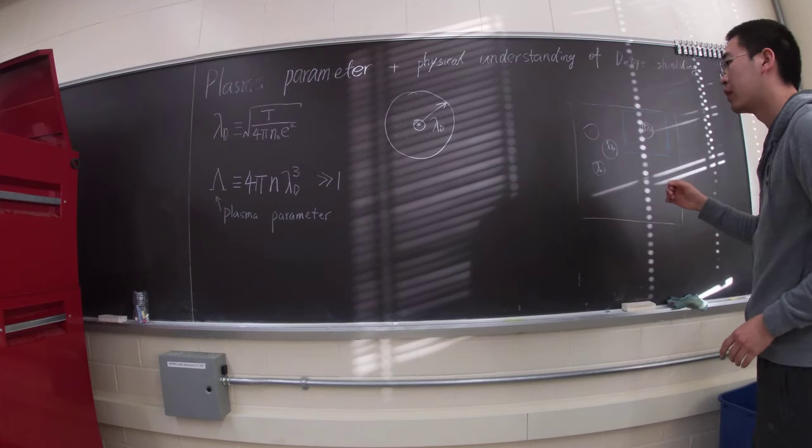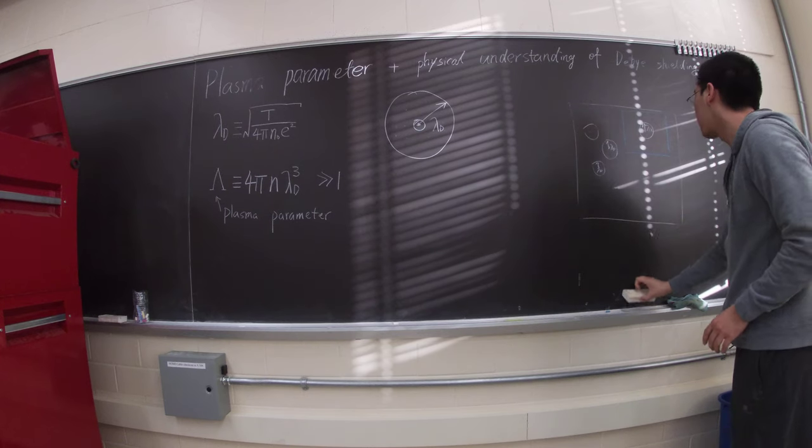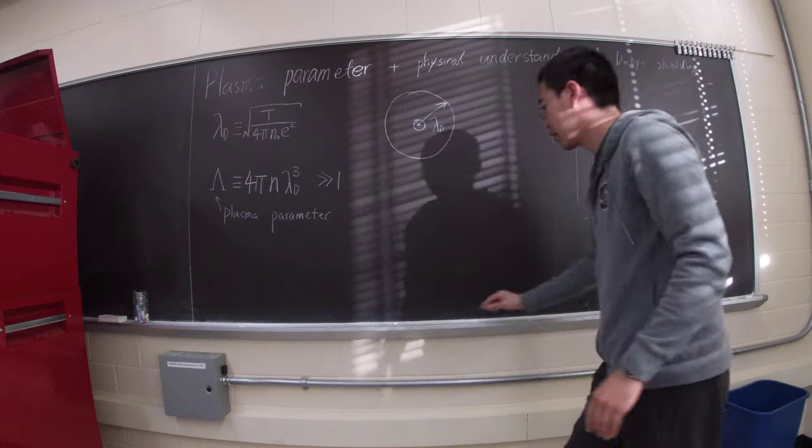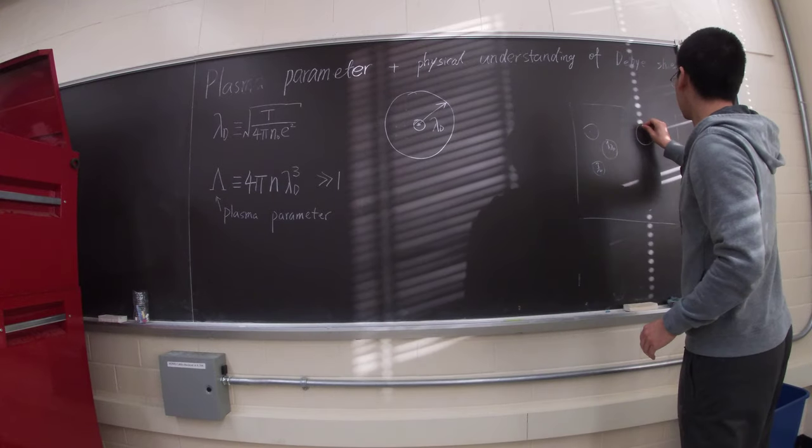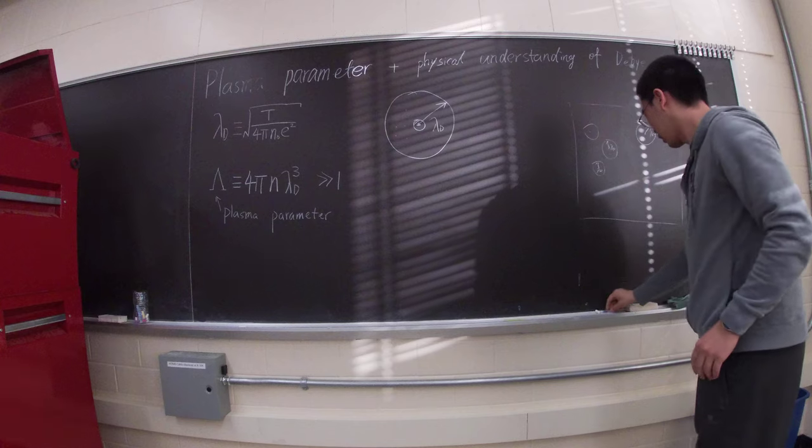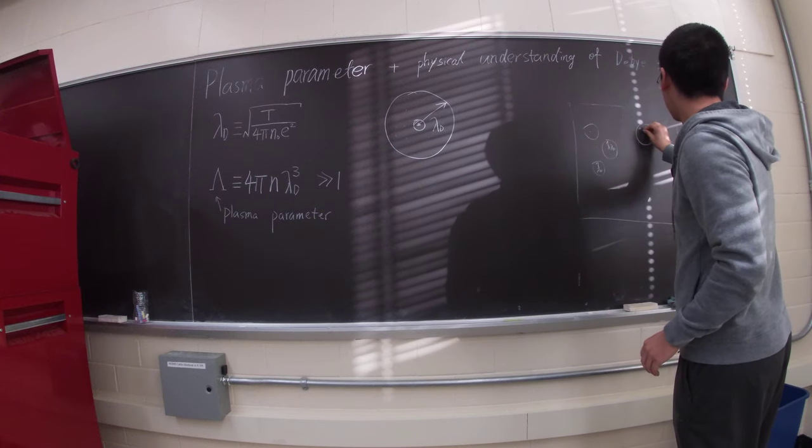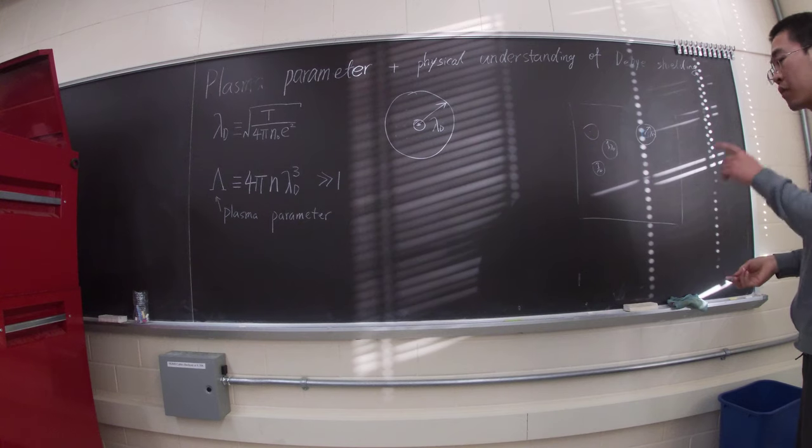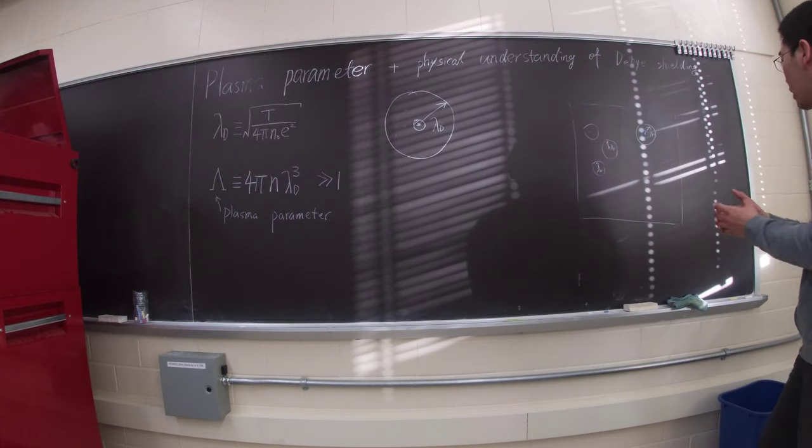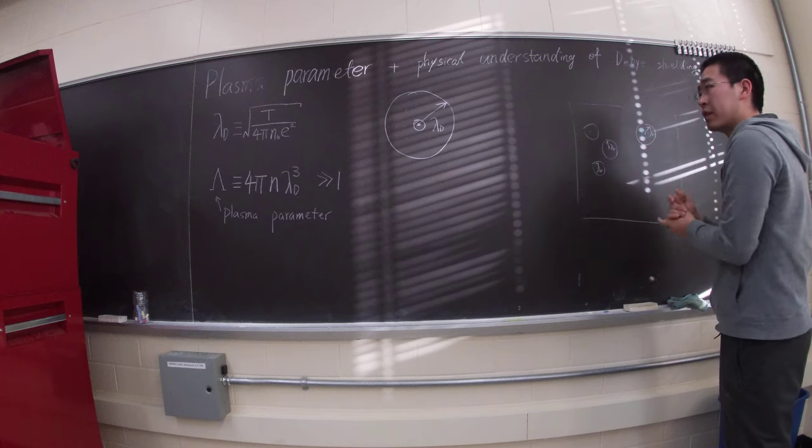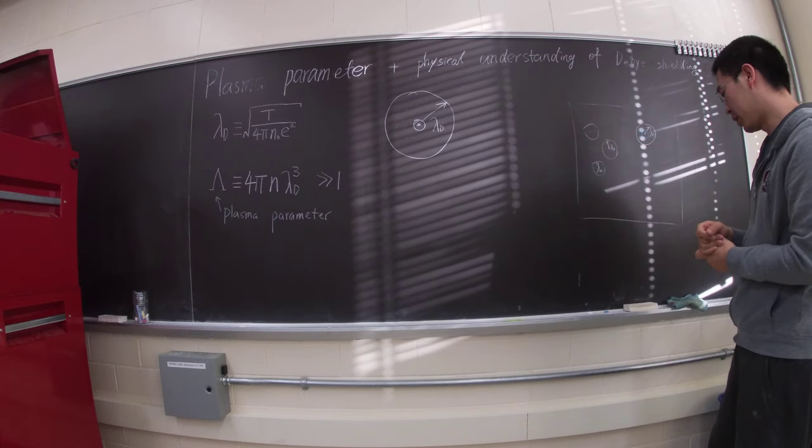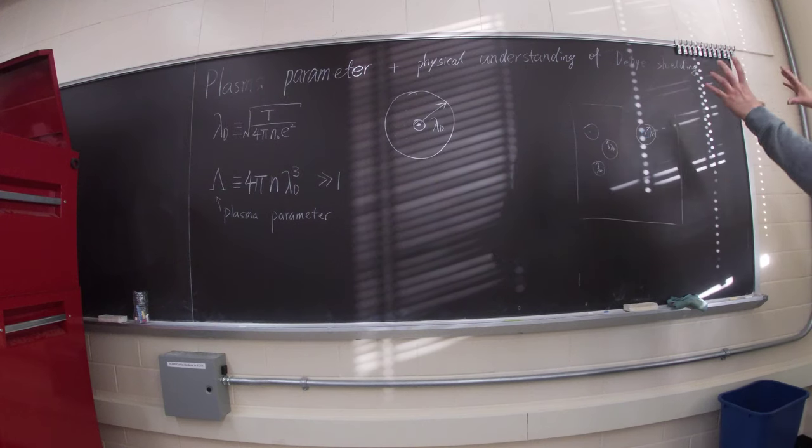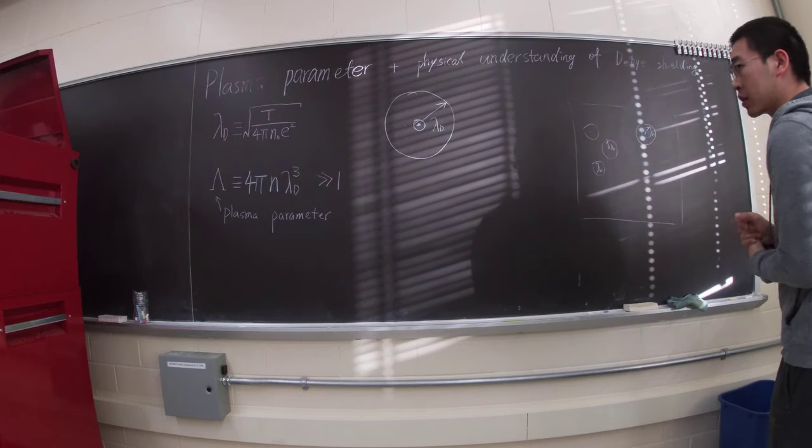Each particle occupies that much space, and at the same time, the bubble is much bigger. So basically it means that each Debye sphere, or within the Debye length, the bubble has multiple particles.